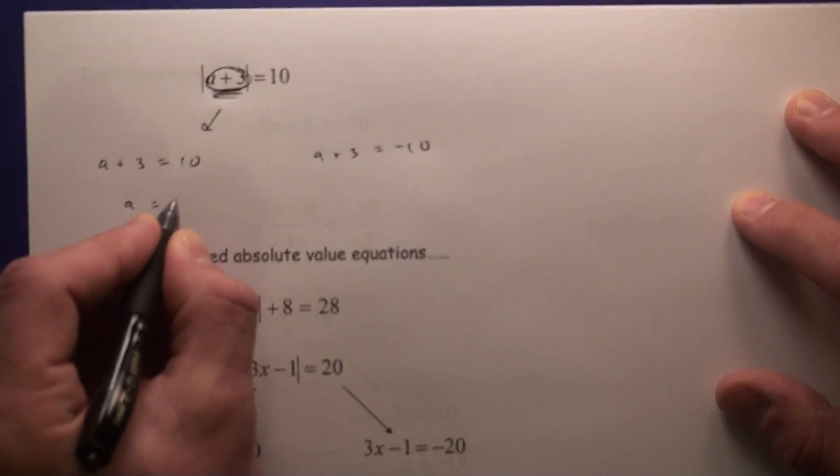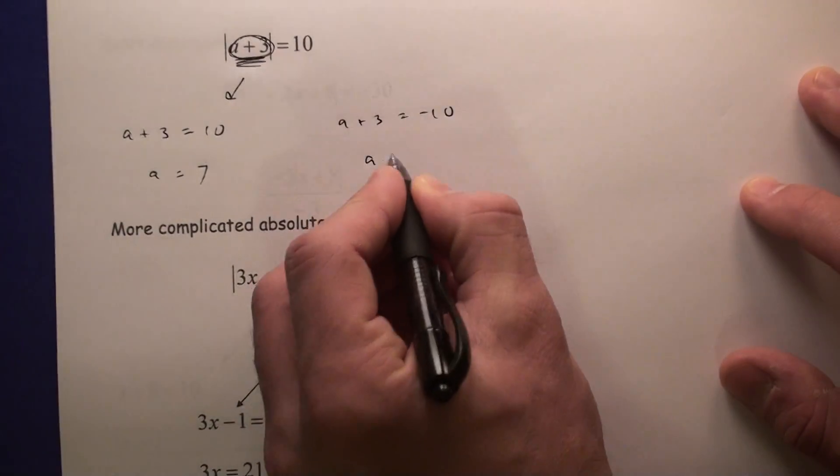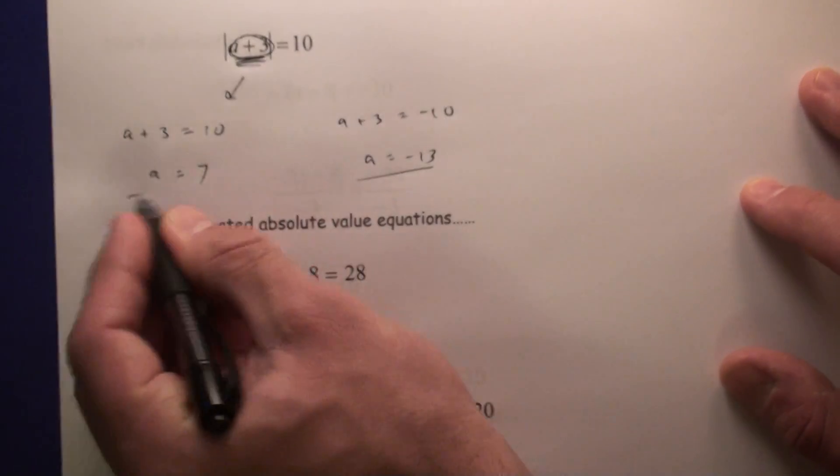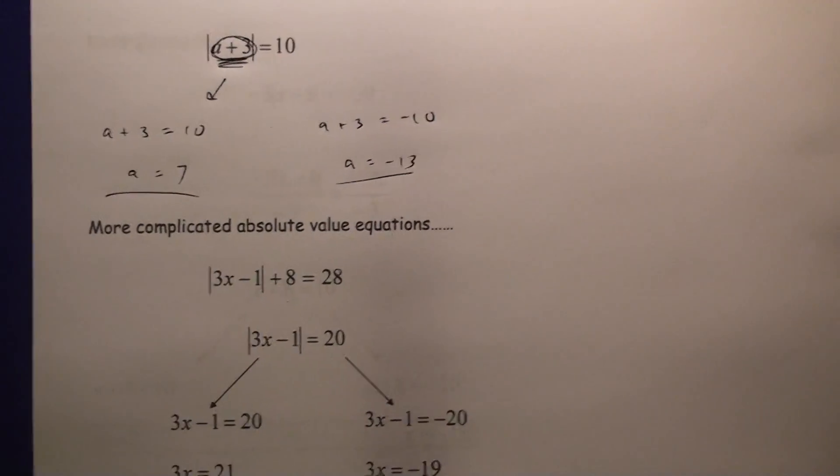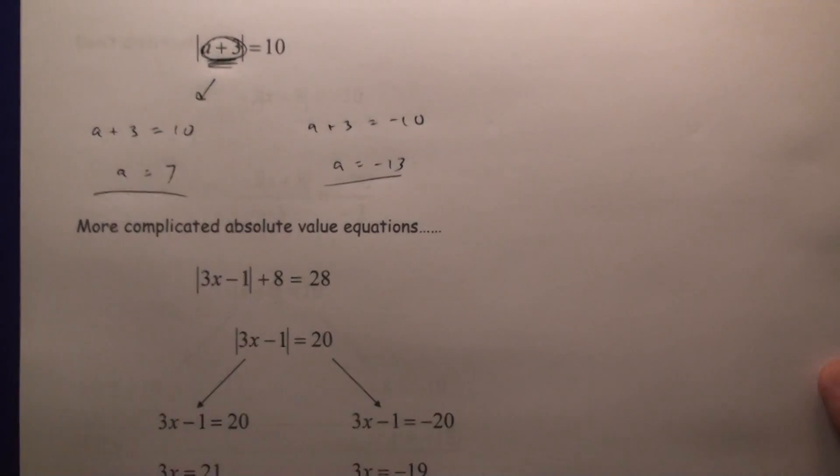Then you get your two answers: a equals 7 or a equals negative 13. So that's the idea whenever you get the absolute value with a binomial in there.